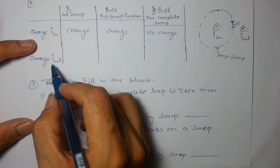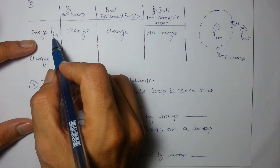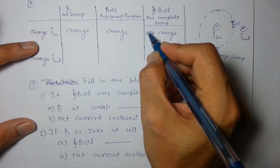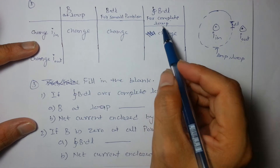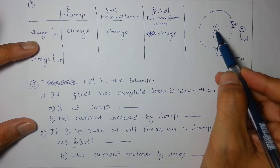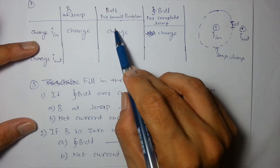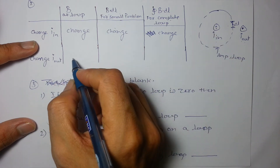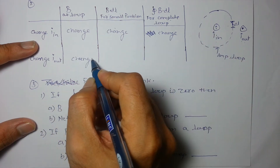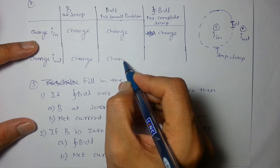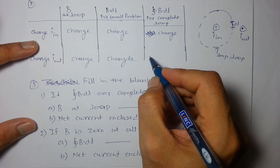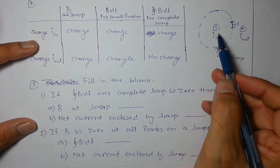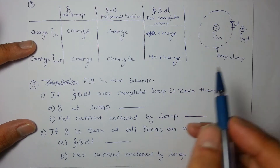But for the complete loop, there will be no change in B dot dl if we change the outside current, because only the inside current is responsible for the complete loop integral. Changing i_in changes the field and everything, including the complete loop B dot dl. Changing i_out changes only the local field and B dot dl for a small portion, but the complete loop integral does not change.